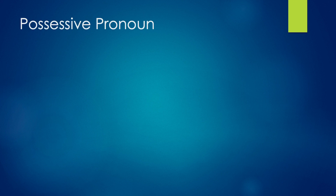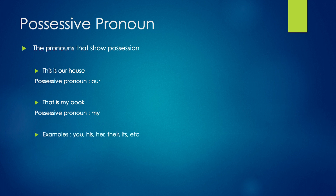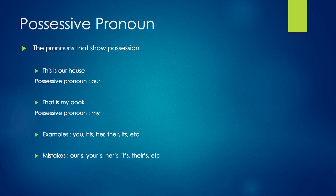Possessive pronouns: the pronouns that show possession or ownership are called possessive pronouns. For example, 'This is our house' — here 'our' is the possessive pronoun. Or 'That is my book' — here 'my' is also a possessive pronoun. Other possessive pronouns are: your, his, her, its, theirs, etc. One common mistake we make is putting an apostrophe before the 's' in words like ours, yours, hers, its, theirs. There should be no apostrophe before 's' in these cases.